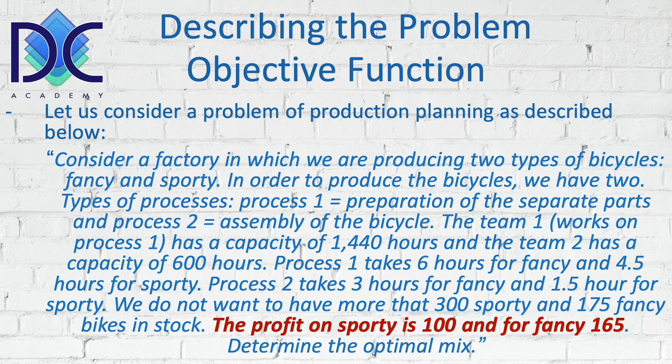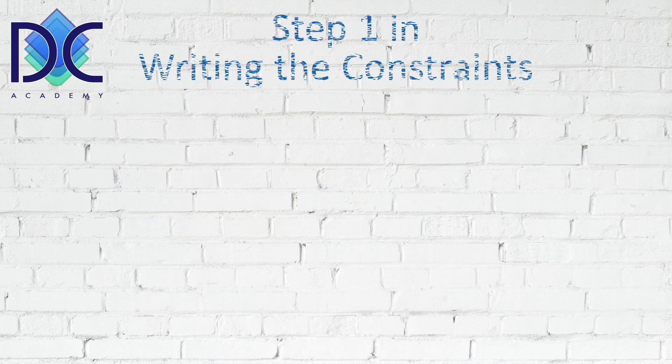The second element we have to look at is the objective function. Here we look at the profit because we have a maximization problem — profit is the most important element. The profit on a sporty is 100 and on the fancy is 165, so based on this we can start writing the constraints.